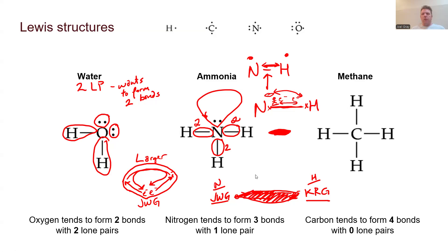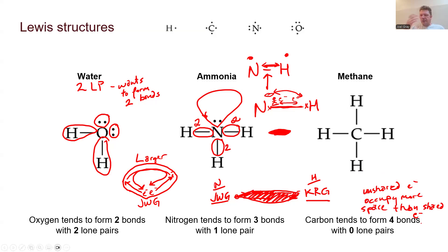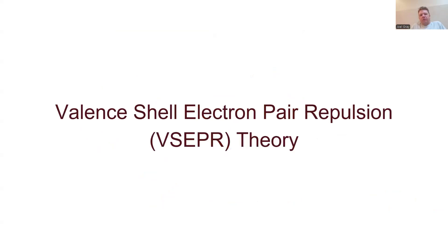The point is: unshared electrons occupy more space than shared electrons. Shared electrons have two beacons to run to — the two different atoms. Unshared electrons don't, so they spread out much more.